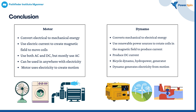Now that the project has come to an end, let's summarize what we have learnt. There are two types of devices that involve electrical energy and mechanical energy: motor and dynamo. Motor converts electrical energy to mechanical energy. It uses electric current to create magnetic fields to move coils. Motor has both AC and DC, but since electricity is involved in our daily use, DC is rarely used. So AC is more popular. To conclude, motor uses electricity to create motion.